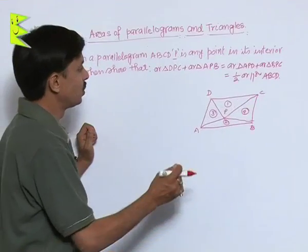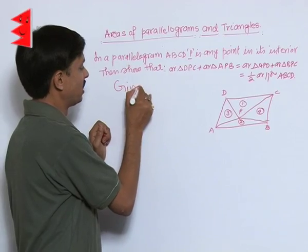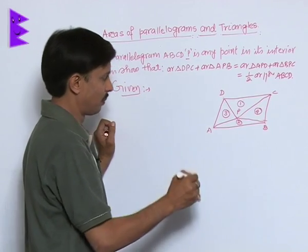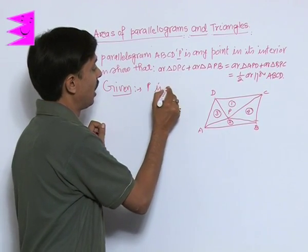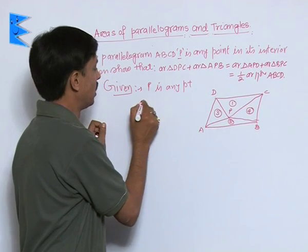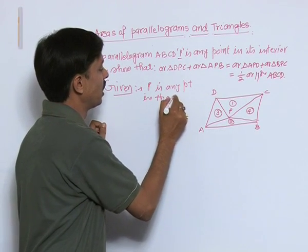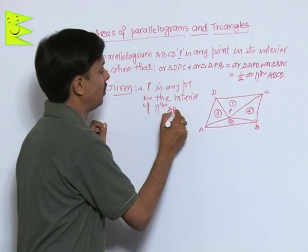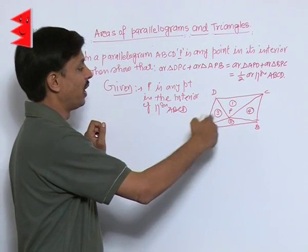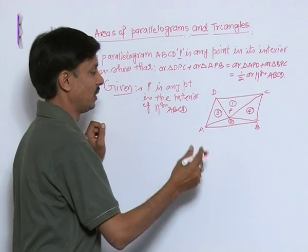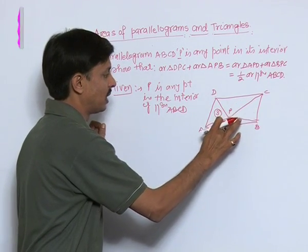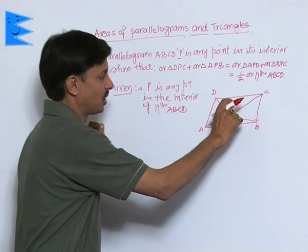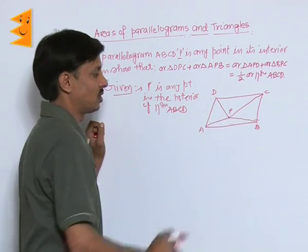As usual, writing the given: ABCD is a parallelogram and P is any interior point of parallelogram ABCD. I am labeling the four triangles formed by joining P to the vertices as triangle 1, triangle 2, triangle 3, and triangle 4.